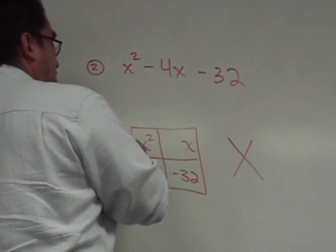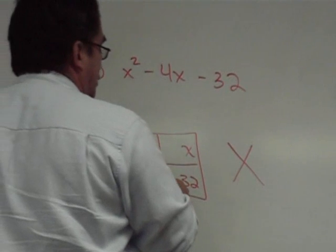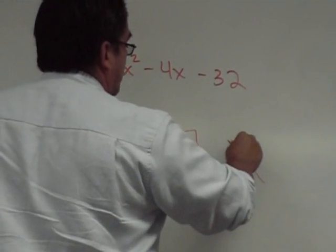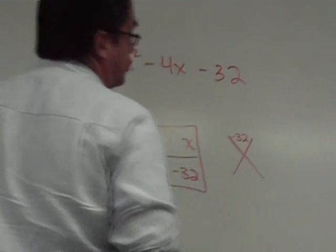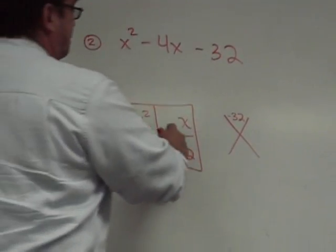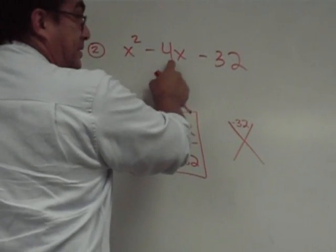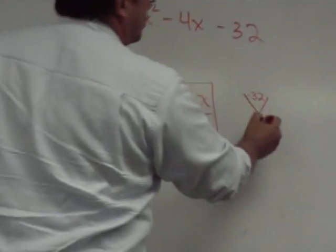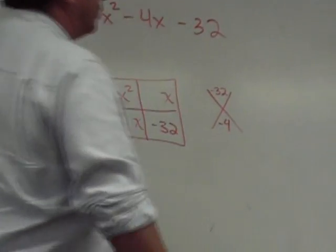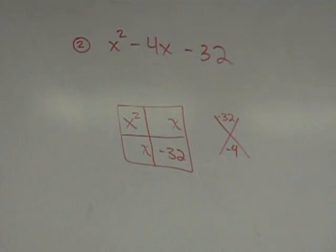I know the product of the two numbers here has to be the same as the product of the two numbers I'm looking for. What is 1 times negative 32? Negative 32. So, I need the product to be negative 32. And what do they have to add up to? They have to give me this negative 4X that I have in my original polynomial. So, that's your job, to solve that X game. And that's the challenge.